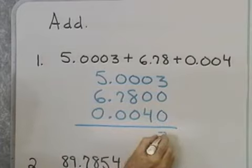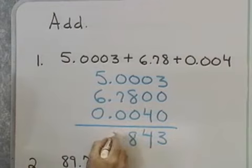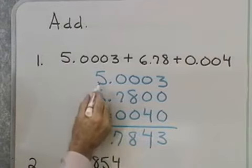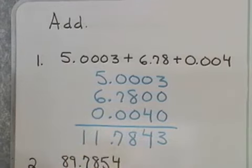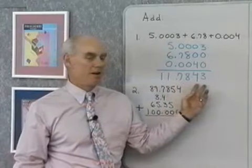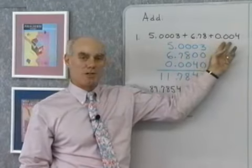Now, I'll add in columns. I get 3, 4, 8, 7, and 6 and 5 is 11. So, I get 11.7843 for the sum of these three numbers here.